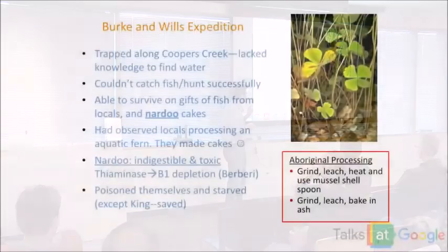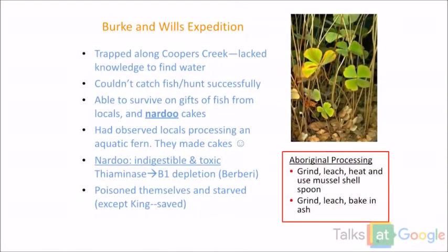But when they were in the camp, what they didn't notice is that the women actually use a sophisticated processing. So they grind them, leach them, heat them, and then only eat them with a mussel shell. You can't let an organic substrate.